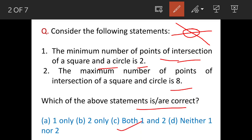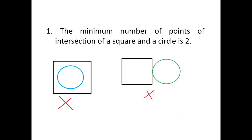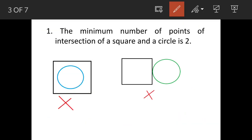Option C: both 1 and 2 are correct. So we'll see the solution now. As per statement 1, minimum number of points of intersection is 2. I have actually drawn two figures here.